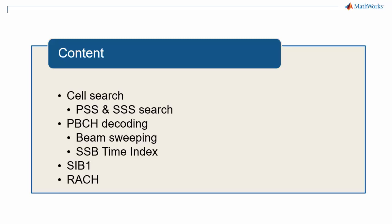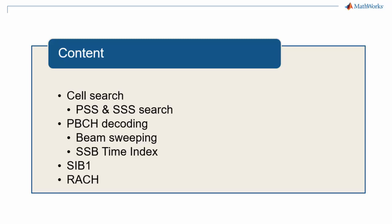Finally, we'll look at the random access channel and procedure. The synchronization signal block provides the UE with the ability to perform frame and symbol synchronization, which means the UE can discover the presence of a downlink 5G signal and start making sense of it.